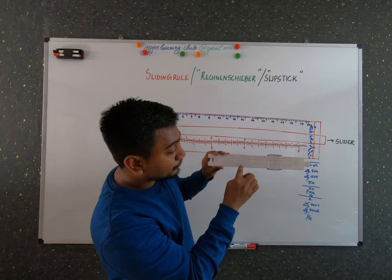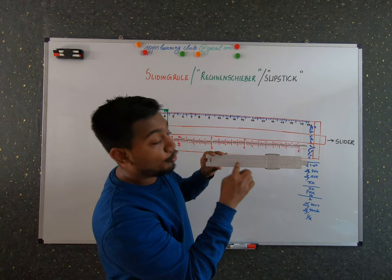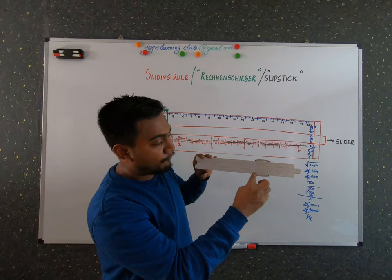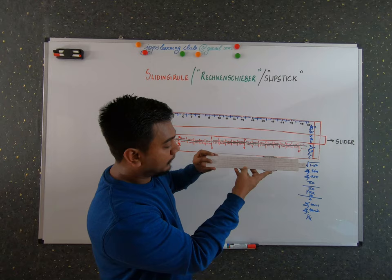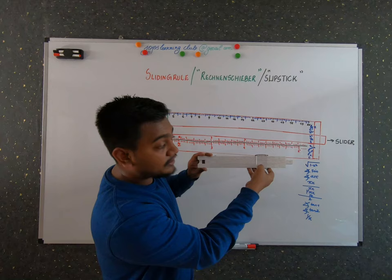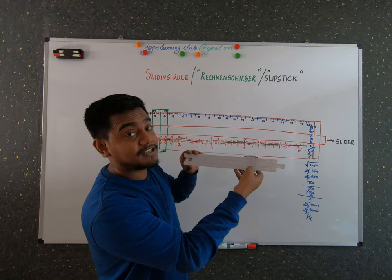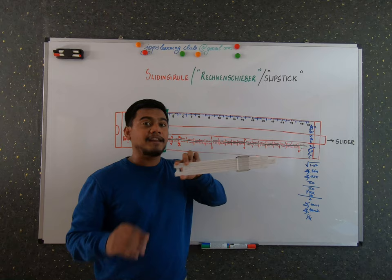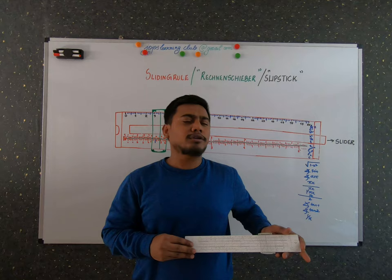For another example, I want to find 13 times 5. You can see that the bottom scale reads 6 and the upper scale reads 5, so you can make the approximation that the answer is 65. This is how you do multiplications on a sliding ruler. I just wanted to show you what a sliding ruler is, and I'll come back with another video on more interesting topics.